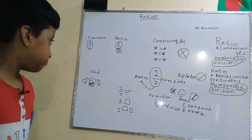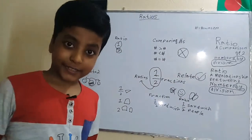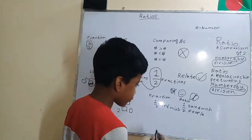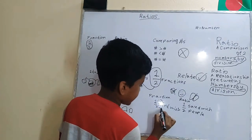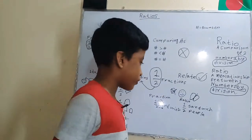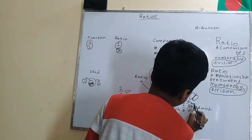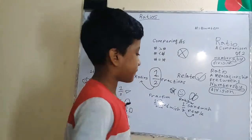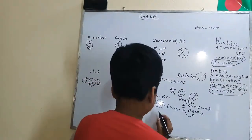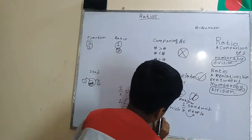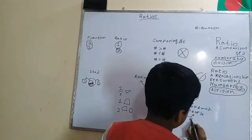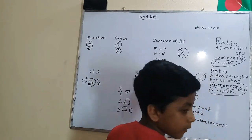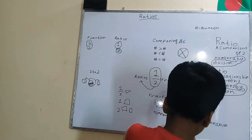Do you see the difference between a ratio and a fraction? In the case of a fraction, the top and bottom numbers both refer to the same thing — the sandwich. But in a ratio, the top and bottom numbers refer to different things: sandwiches and people. The fraction just shows a part of one thing, while the ratio shows a relationship between two different things.